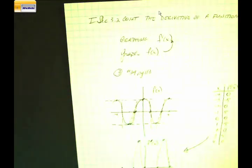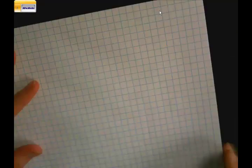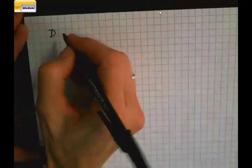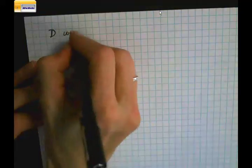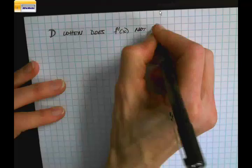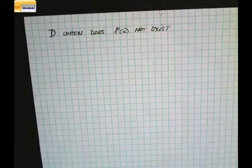Now the next topic: when does the first derivative not exist?